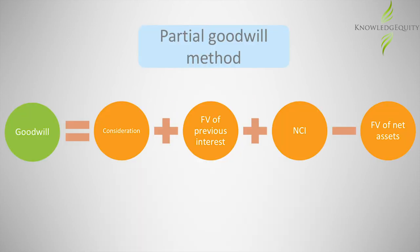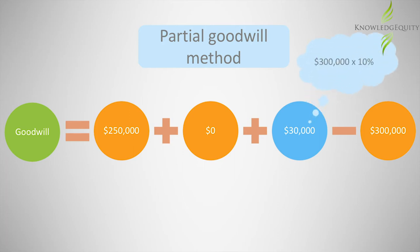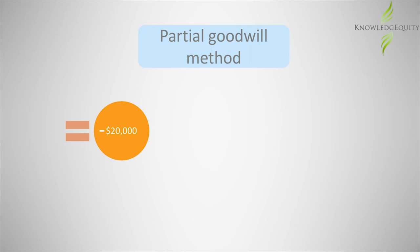If Alfa Limited adopted the partial goodwill method, what would goodwill be? The values for all other variables would be the same, but NCI in this case would be $30,000, which is calculated as $300,000 of identifiable net assets times 10% — the proportion attributable to the non-controlling interest shareholders. Therefore, the final outcome is negative $20,000.